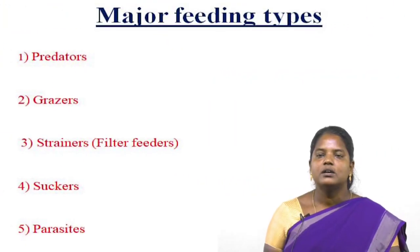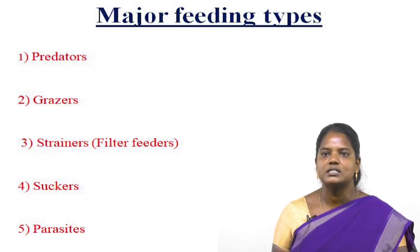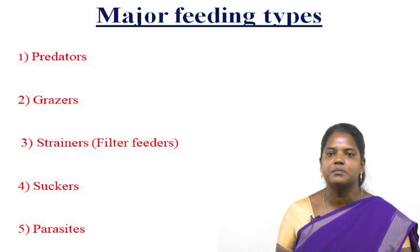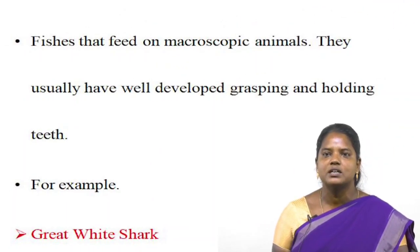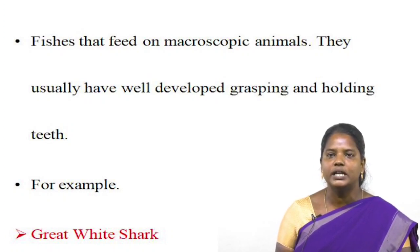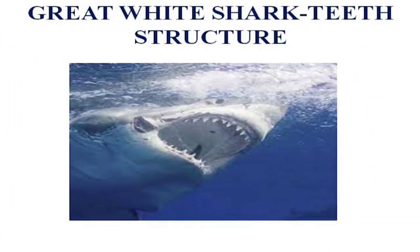The major feeding habits of fishes are: first, predators; second, grazers; third, strainers — meaning filter feeding mechanism; fourth, suckers; and another is parasites. Fishes that feed on macroscopic plants usually have well-developed grasping and holding teeth. For example, the great white shark of marine fishing — this is an example of predatory feeding habit of fishes, illustrating its teeth structure.